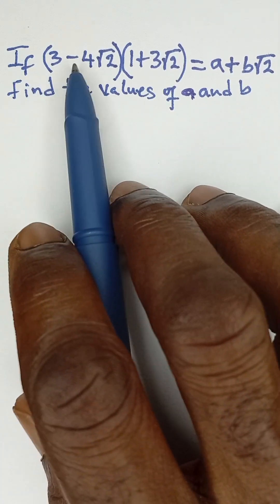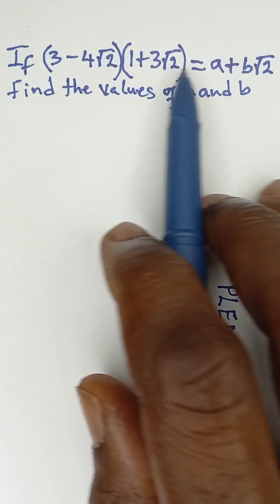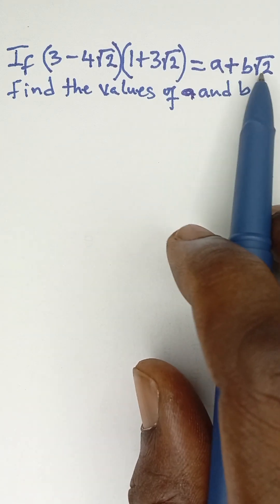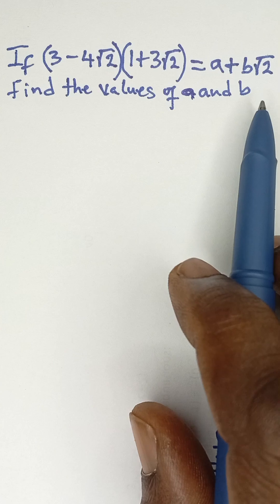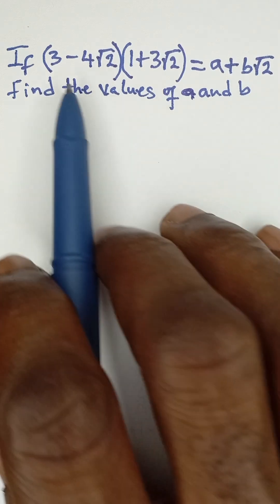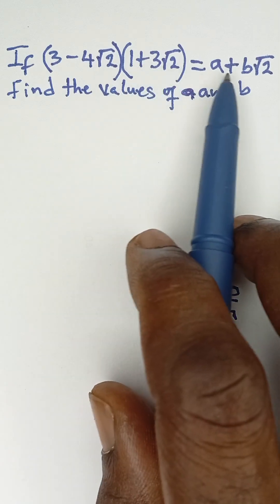If (3 - 4√2)(1 + 3√2) = a + b√2, find the values of a and b. Now let's expand these brackets and then compare our answer with what we have on the right-hand side here.